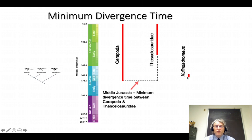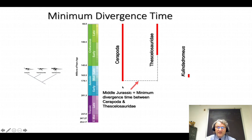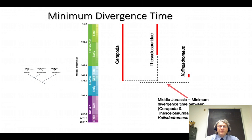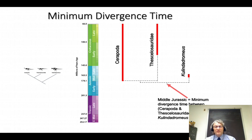Colindodromeus is outside both of these groups, so the shared common ancestor of Colindodromeus and both the others had to be earlier than the concestor of Rerapoda and Thescalosauridae. Even though Colindodromeus appears a little after the first Rerapod, the common ancestor of Colindodromeus and that whole clade had to be even earlier — how much earlier we can't say precisely, but at minimum it was also in the Middle Jurassic, earlier than the Rerapoda-Thescalosauridae split.